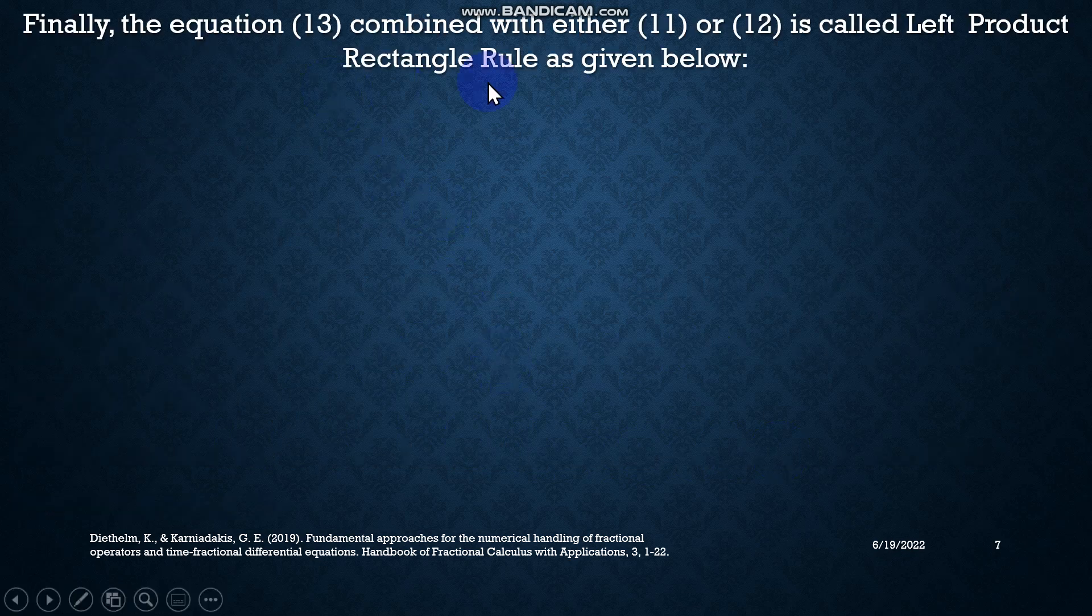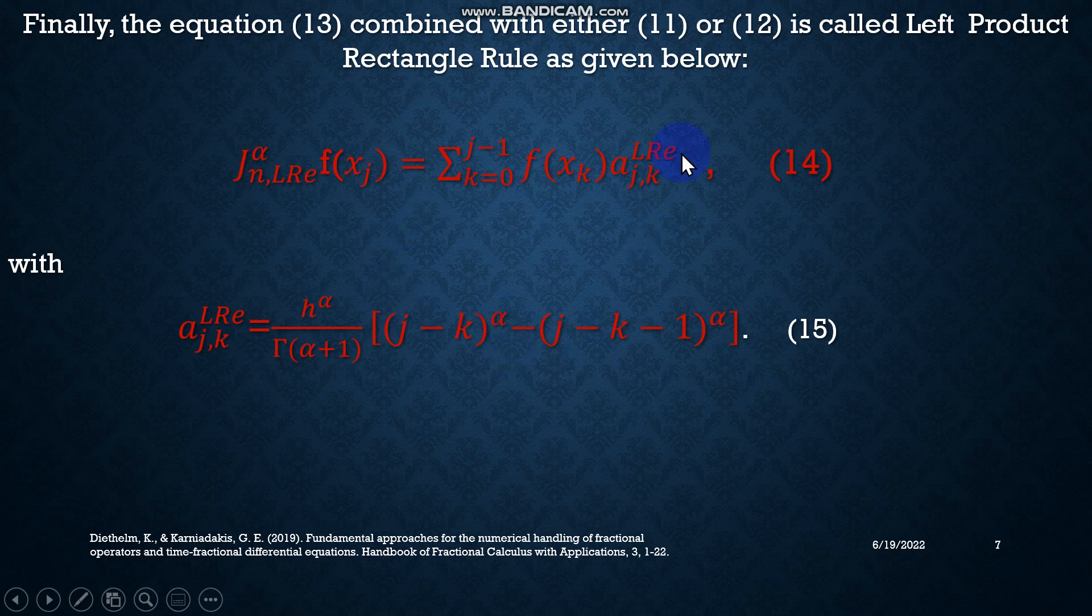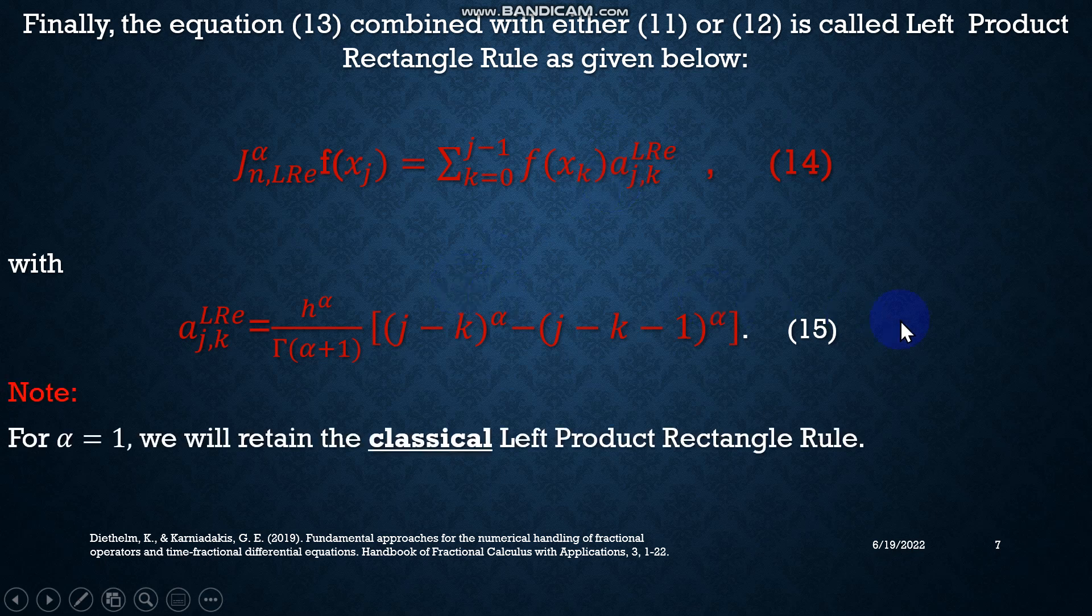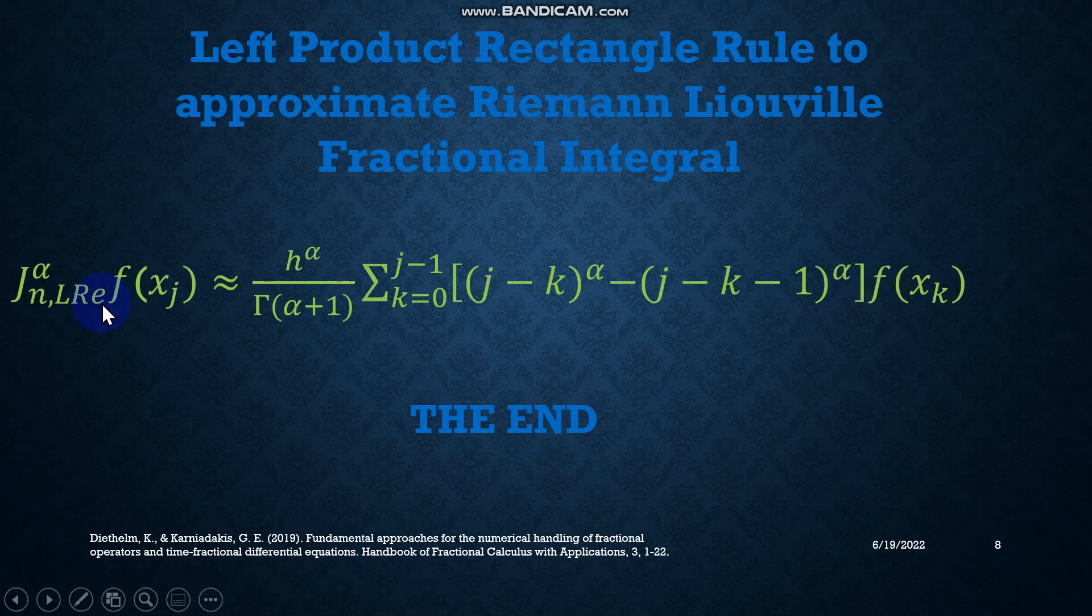So finally, equation 13, if you combine with either 11 or 12, we will get our required formula, equation 14, in which these weights are denoted by equation number 15. So for somebody who is familiar with classical numerical analysis, if you replace α by 1, you will have the classical left product rectangle in classical numerical analysis.